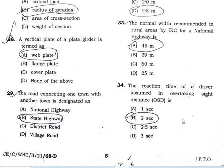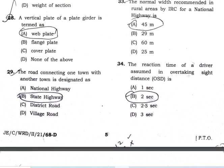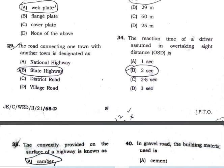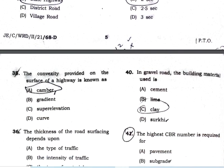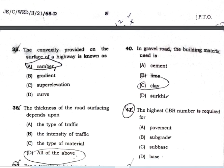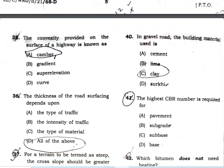The right-of-way for national highways is 45 meters. The reaction time used in the calculation of overtaking sight distance is 2 seconds, while the reaction time for safe stopping sight distance is 2.5 seconds. Question number 35: the convexity provided on the surface of a highway is known as camber.